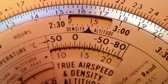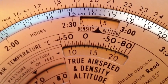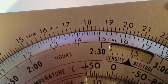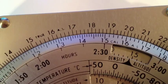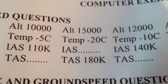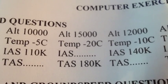On the E6B flight computer, here in our true airspeed, density altitude, and temperature window, we have 15,000 foot pressure altitude and minus 20 on the temperature. As we slide this over to a true airspeed of 180, look on the outside scale and find 180. We determine on the inside scale what the indicated airspeed is — in this case, the indicated airspeed is 144. So given 15,000 feet pressure altitude, minus 20 Celsius, and a desired true airspeed of 180, you would fly 144 knots indicated.